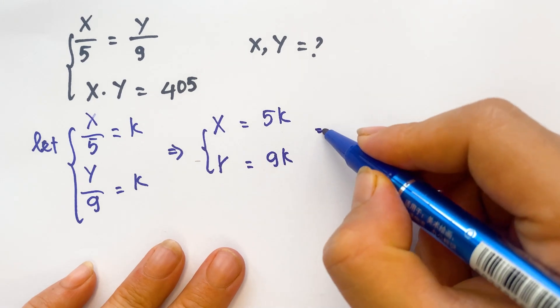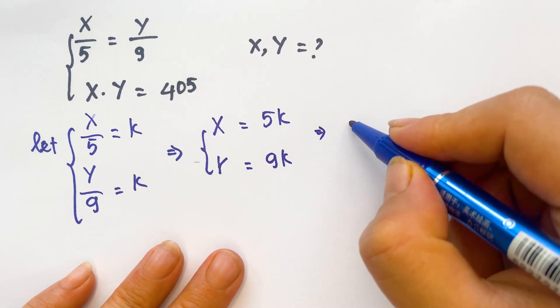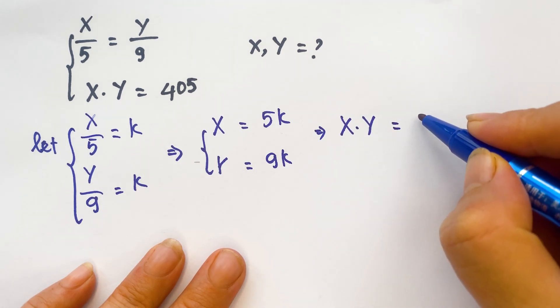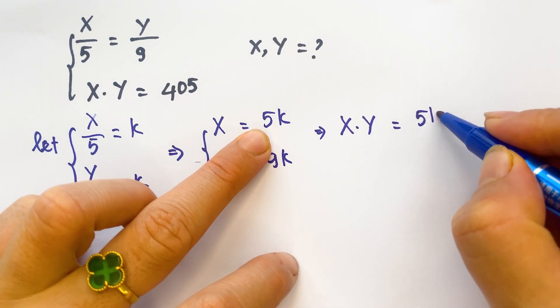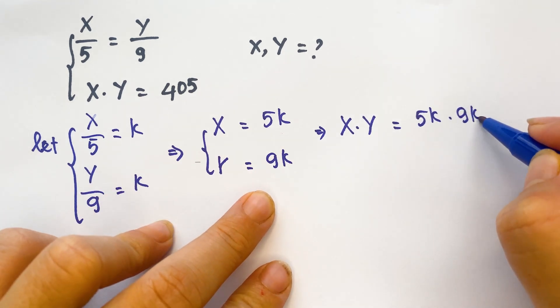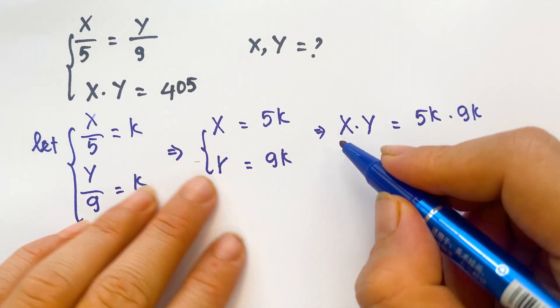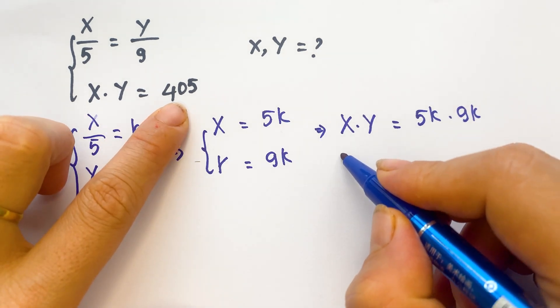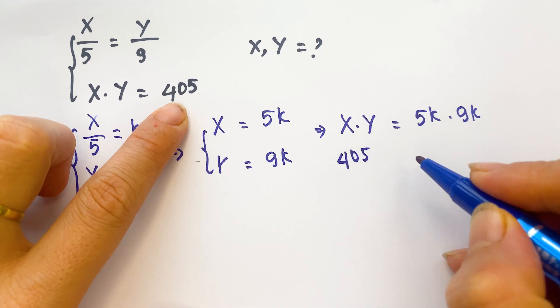And then we can also have that x times y equals 5k times 9k. And so, everyone can see x times y equals 405.